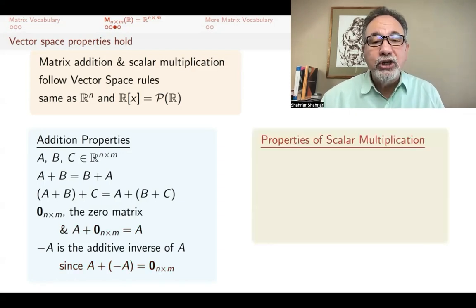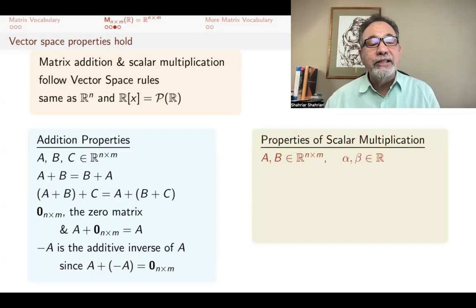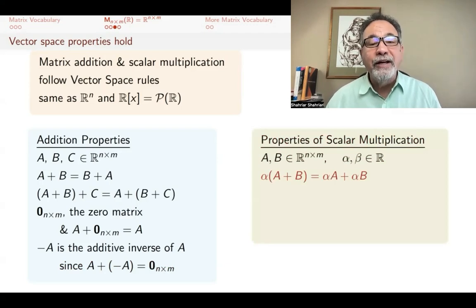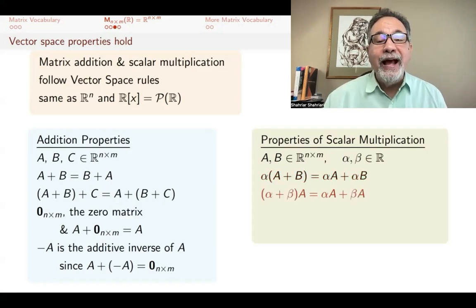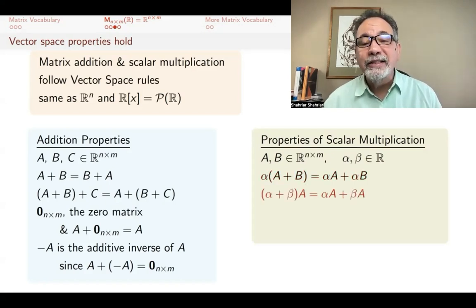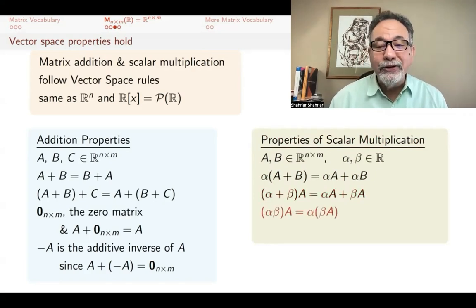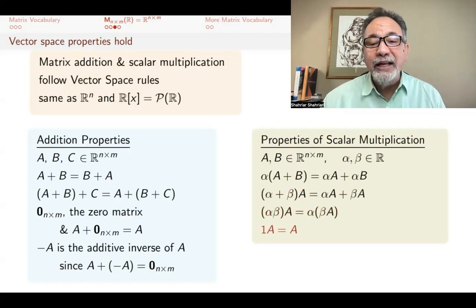For scalar multiplication, we have similar kinds of properties. If you have two matrices that are n by m and two scalars α and β, then one of the properties we have is this distributive property that α(A + B) is the same as αA + αB. And (α + β)A is the same as αA + βA. And (αβ)A is the same as α(βA). And 1A is the same as A, one being the number one.